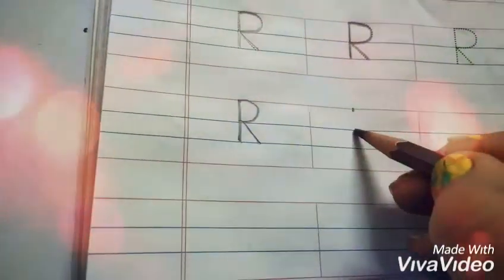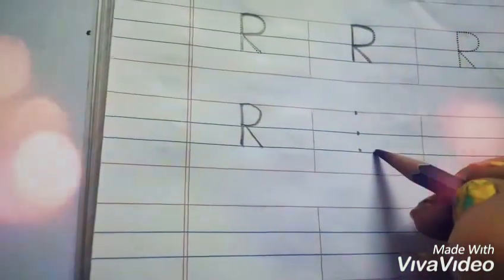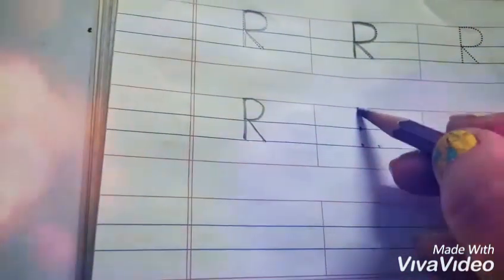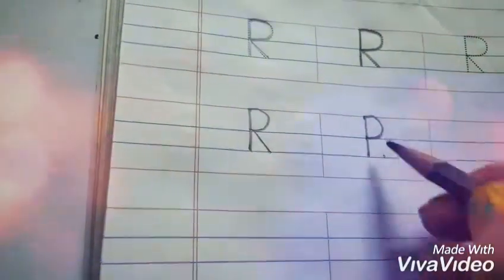Here we go. One dot, two dot, three dot, and here is four dot. Make a standing line. Half curve. And slanting line. Okay.